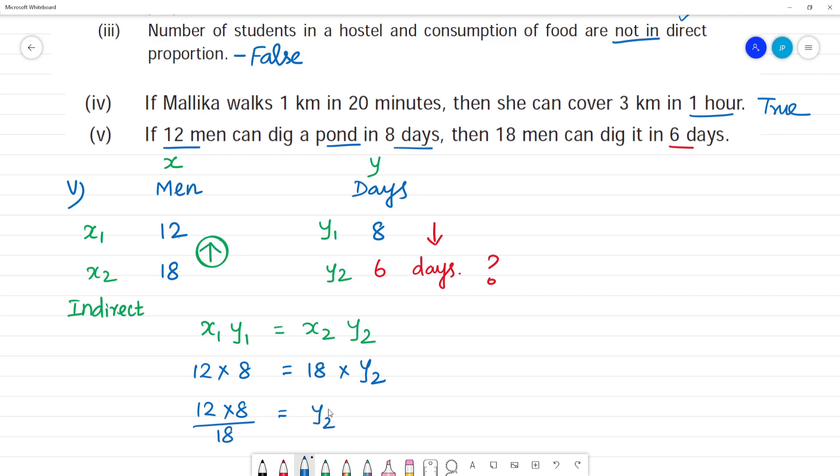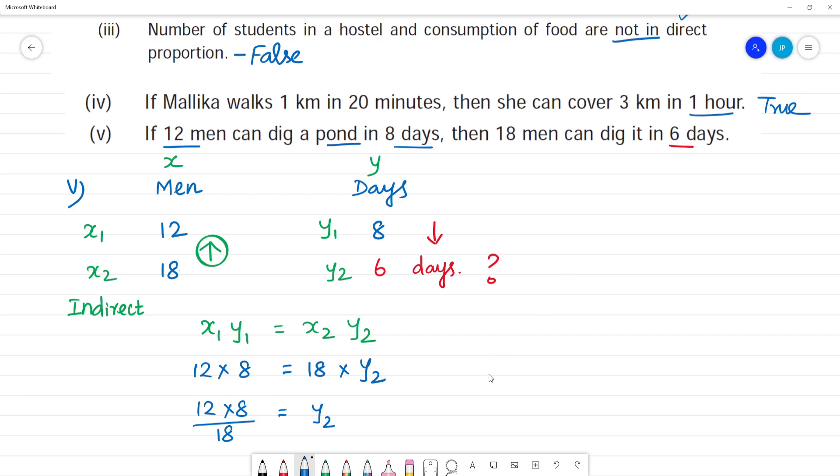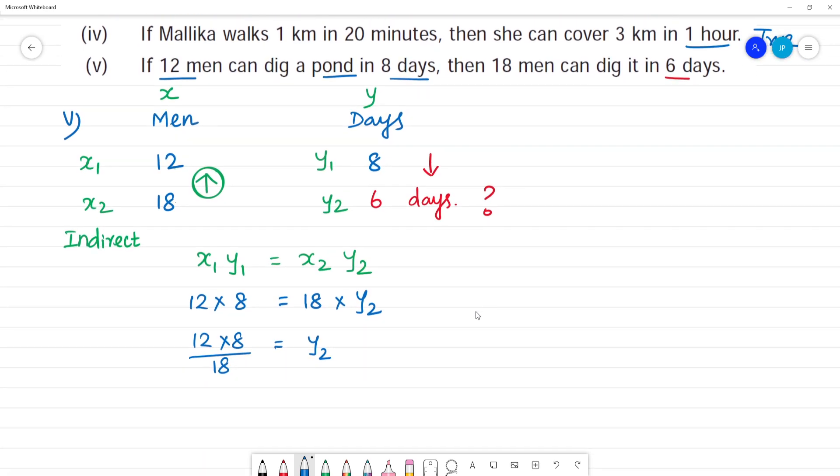This is equal to y2. So let's check if it's correct. Cancel by 18, cancel by 3, cancel by 6. 3 times 6 is 18, 4, 3 times 4 is 12.